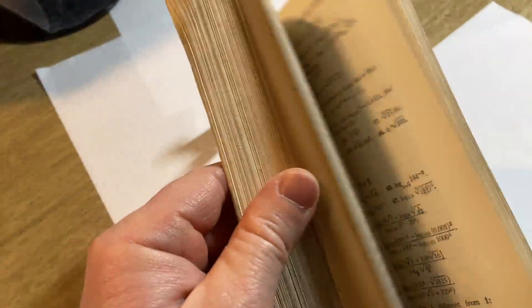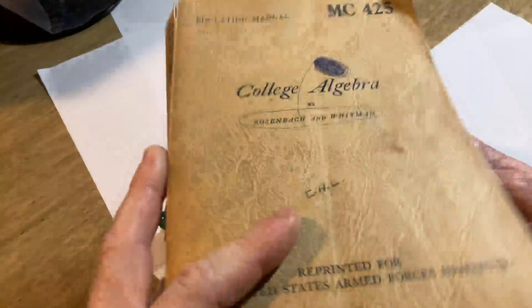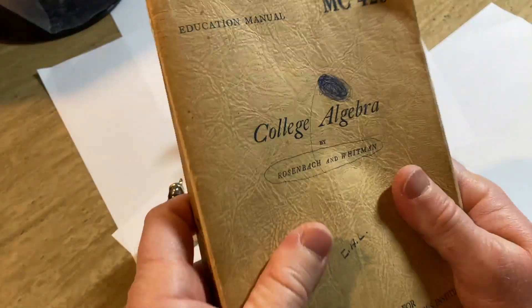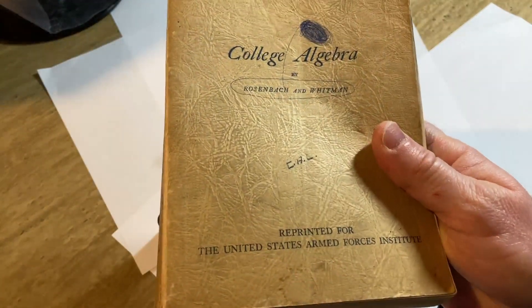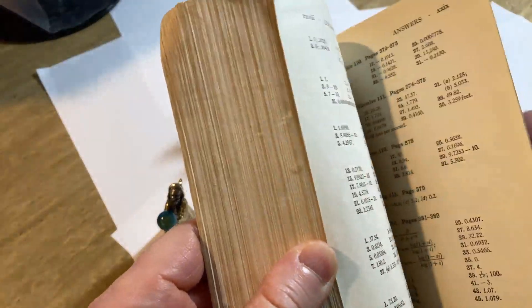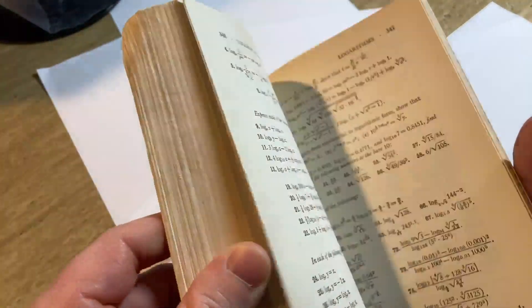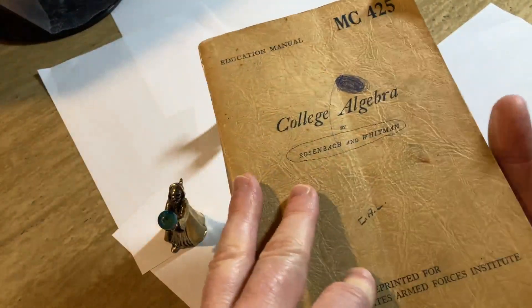This book is really beat up and old, and I just got to give it a whiff. It smells so good. It smells so old. But it's like a weird soft cover. It's like a tough book because it's for the Armed Forces Institute. This book has answers to all of the odd number problems, which is really good. And it's got tons of exercises. Let's take a look at the inside of this book so you can see what it's like.